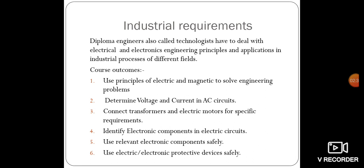For the second course outcome, we determine voltage and current in AC circuits. In AC circuits we have to understand what is resistance, inductance, and capacitance, and what is the effect on voltage and current when it passes through AC circuit elements.